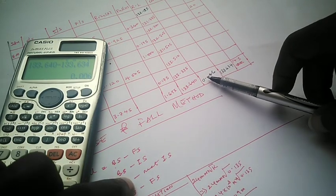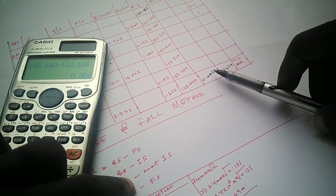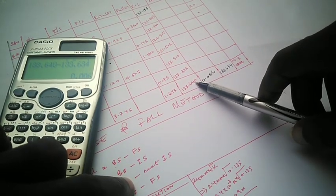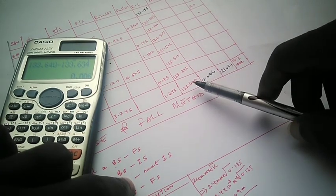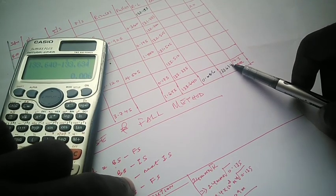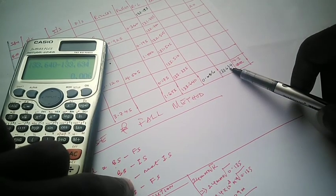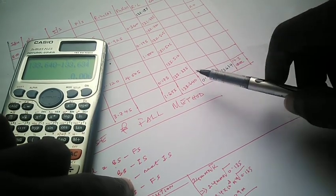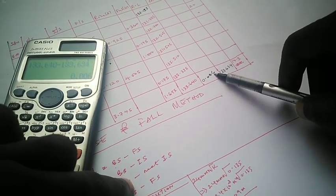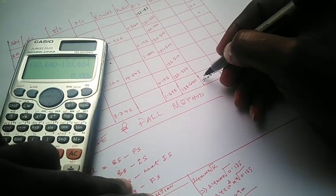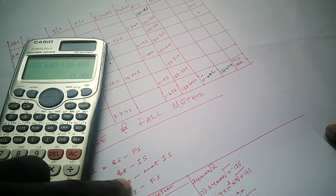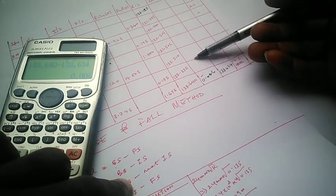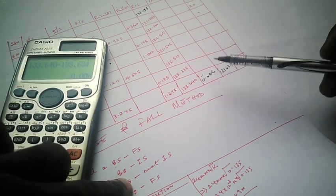The next thing we are going to do is determine what sign the correction is going to have. If you look at it, this is 0.640 and this is 0.634. Since 640 is more than 634, if you want to get from 640 to 634 you are going to remove 6 from it. Therefore the correction here will have a negative sign. Any other correction we are going to get here will also be negative.